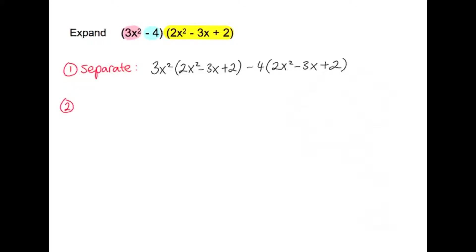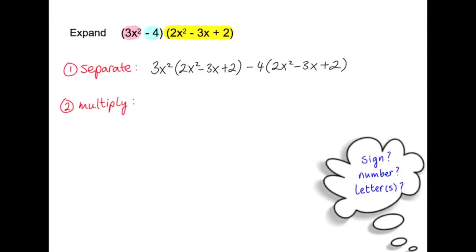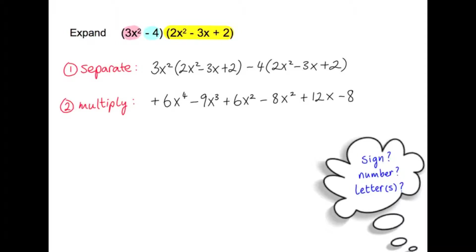The second step is that we want to multiply this out. Think about what is the sign, what is the number, and what is the letter. 3x squared by 2x squared is plus 6x to the power of 4. The second term: 3 threes are 9 and it's x cubed because x squared by x gives x cubed, so minus 9x cubed. The next term is plus 6x squared. Then minus: 2 fours are 8 and the letter is x squared, so minus 8x squared. Next, minus by minus gives plus, 3 fours are 12 and the letter is x, so plus 12x. The last one: minus by plus is minus and 4 twos are 8, so minus 8.